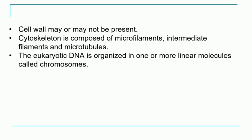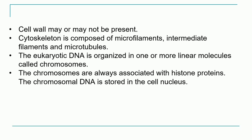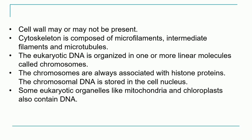This eukaryotic cell has DNA which is in the form of linear molecules called chromosomes. However, these chromosomes are not present in the form of chromosomes normally; they can form this chromosome structure only during the process of cell division. These chromosomes are associated with proteins called histone proteins. The chromosomal DNA is always stored inside the cell nucleus. Some eukaryotic organelles like mitochondria and chloroplasts also contain DNA.